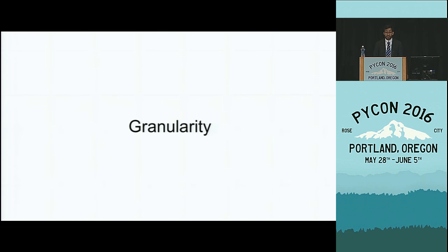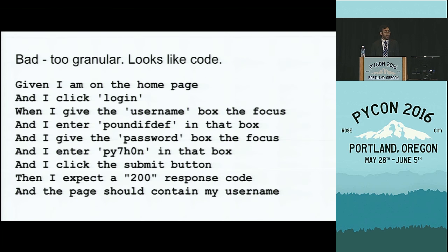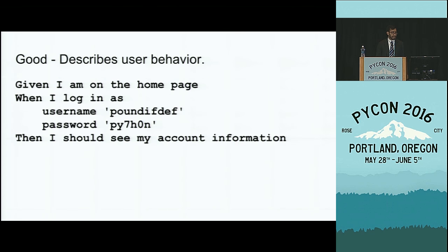One of the biggest pitfalls I see people make when starting out is they write tests which are really granular — they list so many steps that each step basically corresponds to a piece of code on the back end to implement the test. At this point we've really missed the forest for the trees; we are not focusing on what our users are trying to accomplish. Instead, we have focused on how the code is supposed to behave at a very granular level. If I were to revise this, all of the intermediary steps required to do an automated test are abstracted away by these higher-level behaviors of our user.